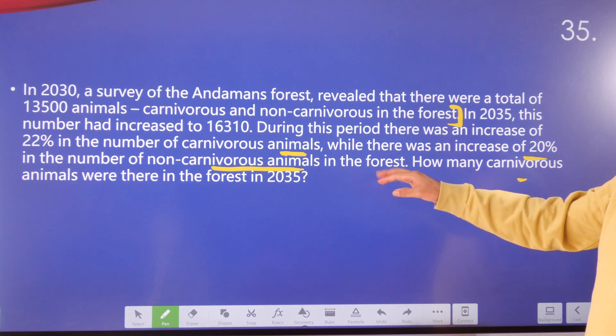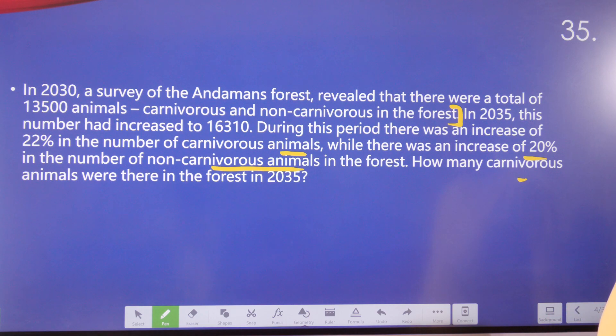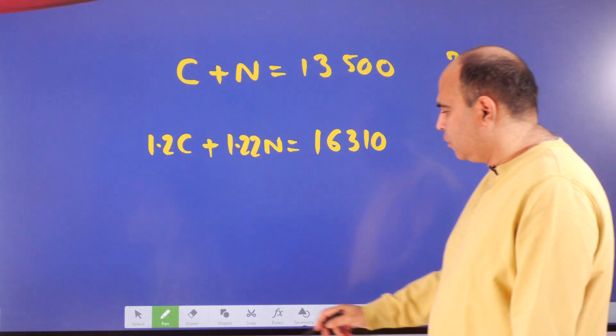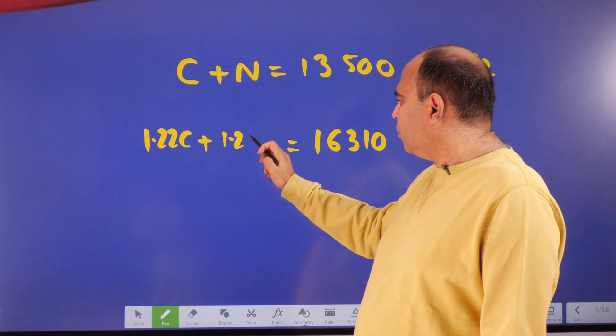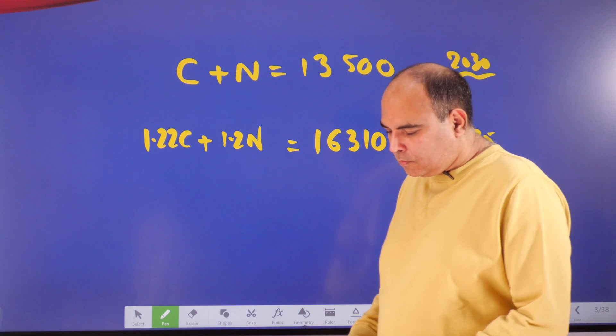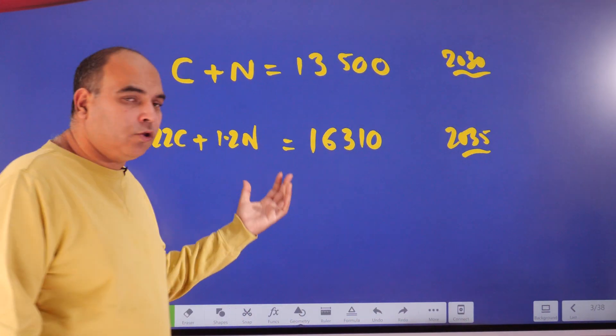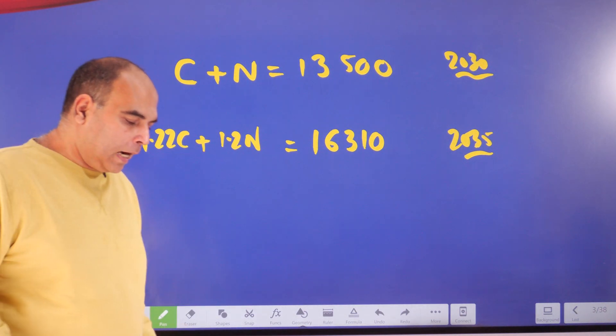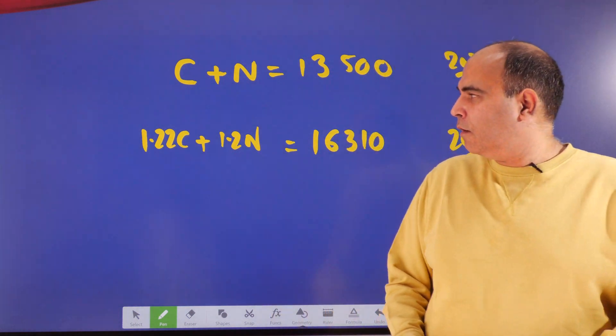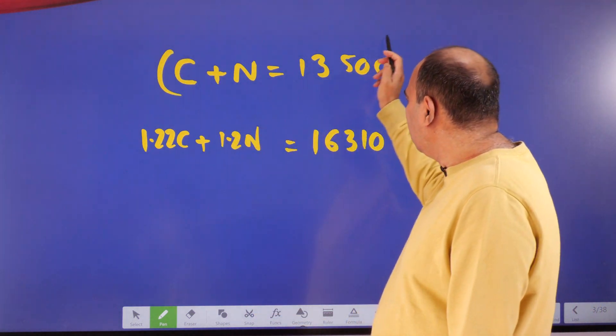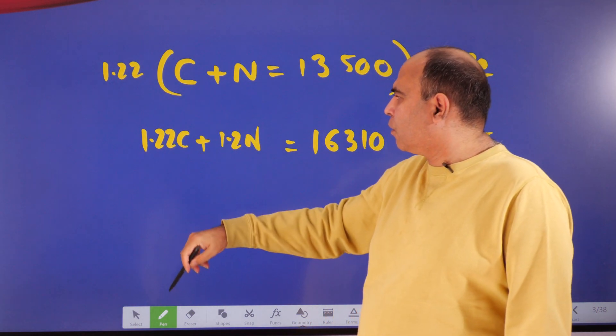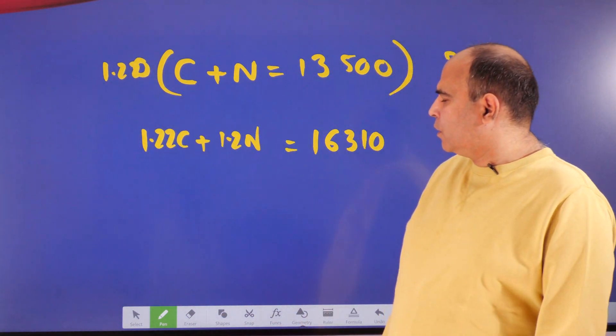Now, of course, as I said, there's a straightforward two equations, two unknowns situation. You can solve this through a standard equation-solving process of eliminating one of the variables by multiplying. Let's say this equation by 1.22 or 1.20—that will be an easier multiplier. If I multiply that equation by 1.20, I get 1.20C + 1.20N equal to a 20% increase in 13,500.